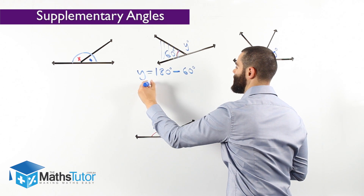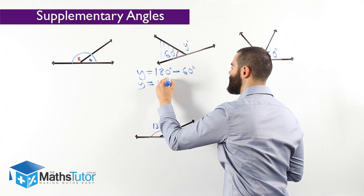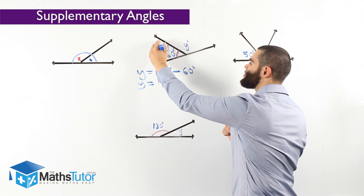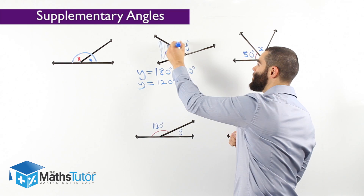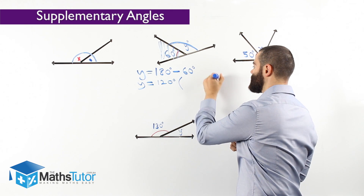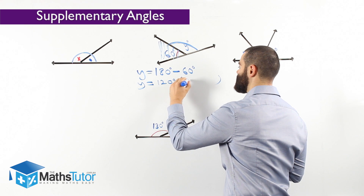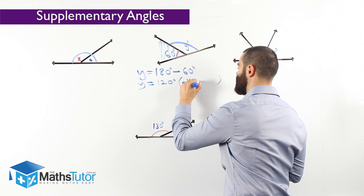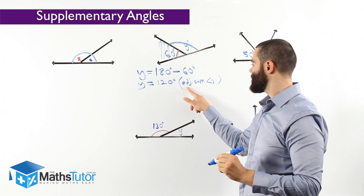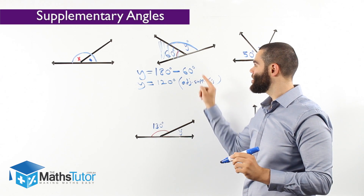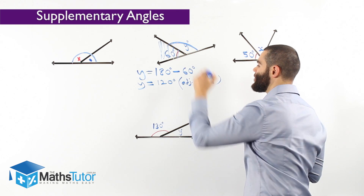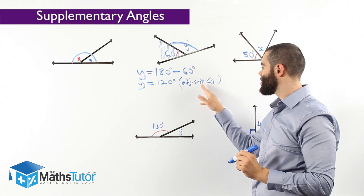We're going to be left with 120 degrees. So 180 is the total, take away the 60, and we're left with 120 degrees. That means y is 120 degrees. We always write our reason: adjacent supplementary angles. That's our reason for working out y — 180 degrees total, take away the 60, we are left with y equals 120. Adjacent supplementary angles.